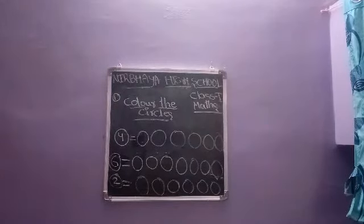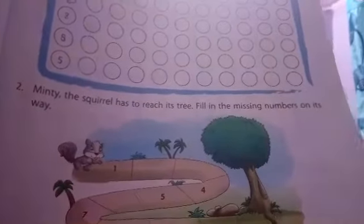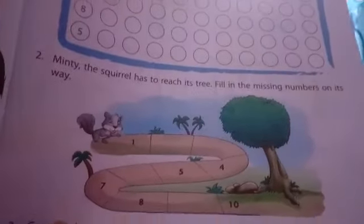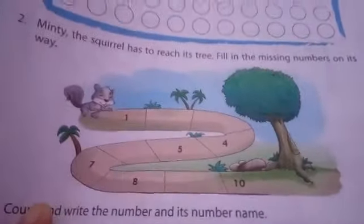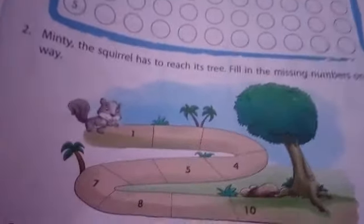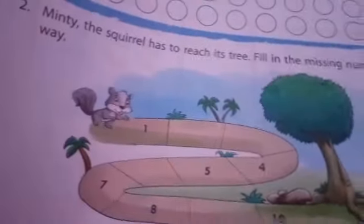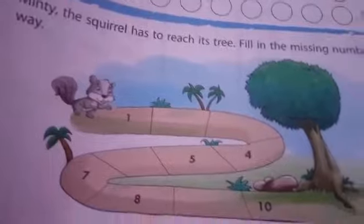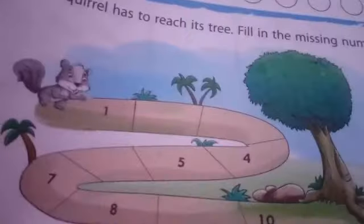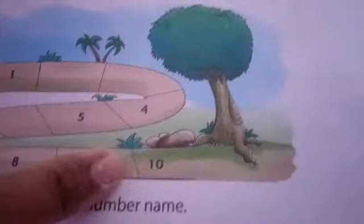Next one — Minty the squirrel has to reach its tree. Fill in the missing numbers on its way. We have to fill the missing numbers. Here the squirrel starts on number 1: 1, 2, 3, 4, 5, 6, 7, 8, 9 — and reach the tree. This is our Minty activity.